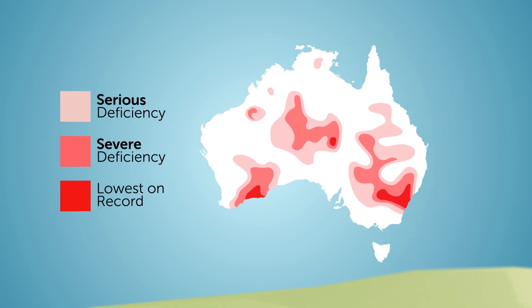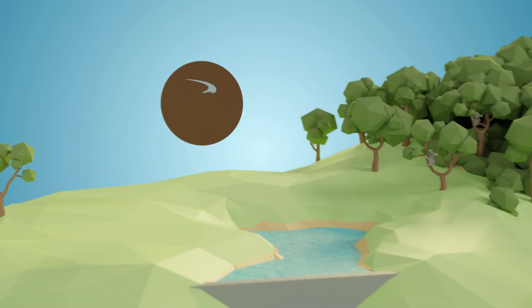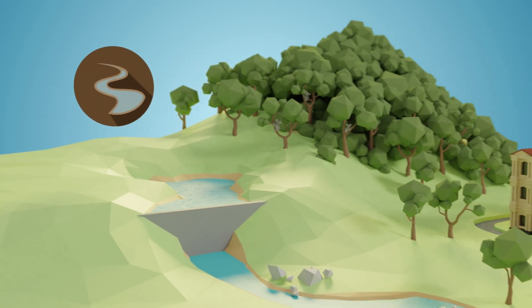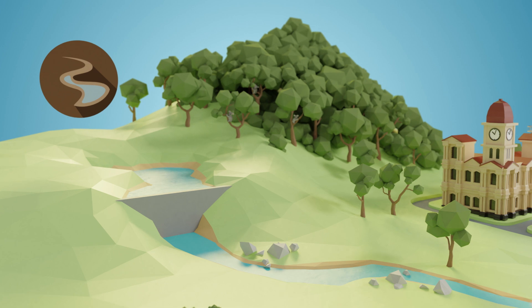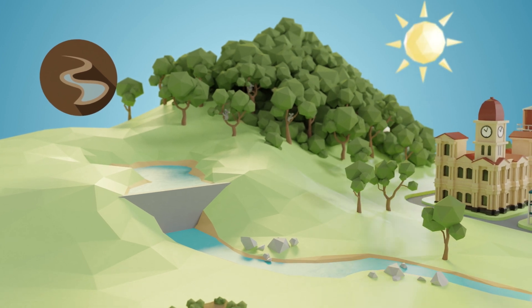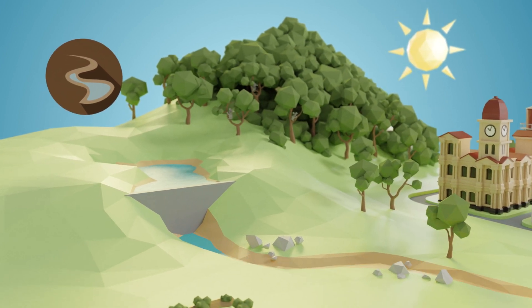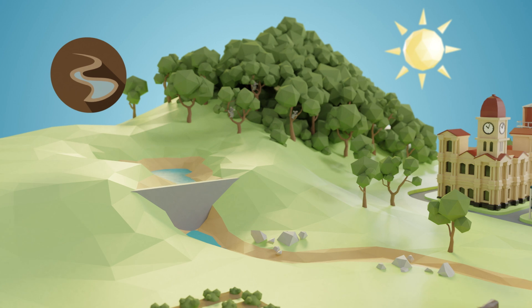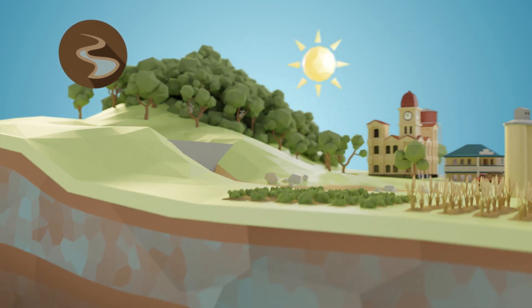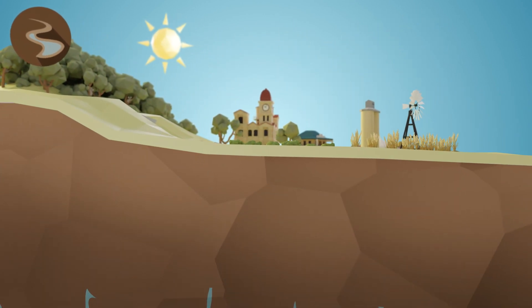Continued low rainfall can mean less runoff and lead to hydrological drought, especially when combined with high temperatures. River levels fall, water storages drop and soils become drier.